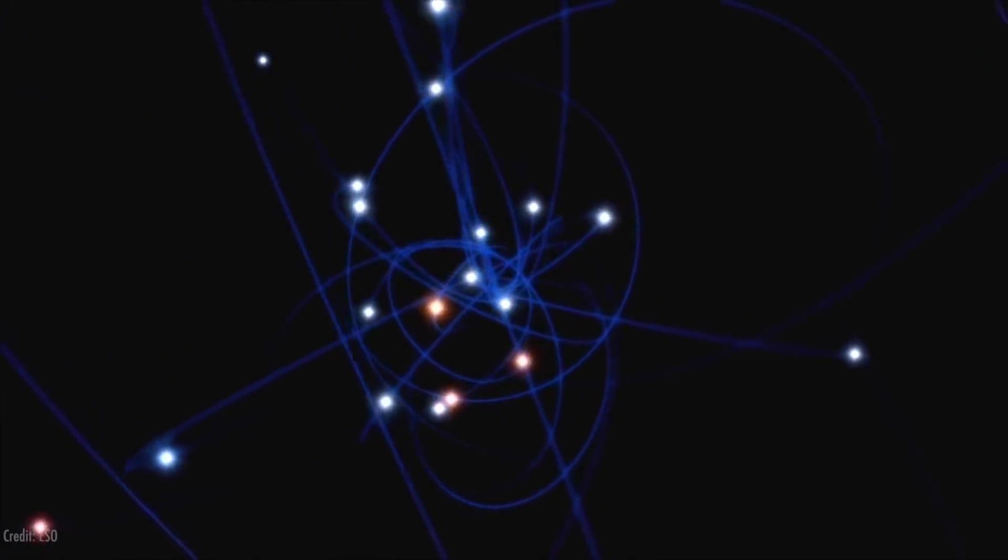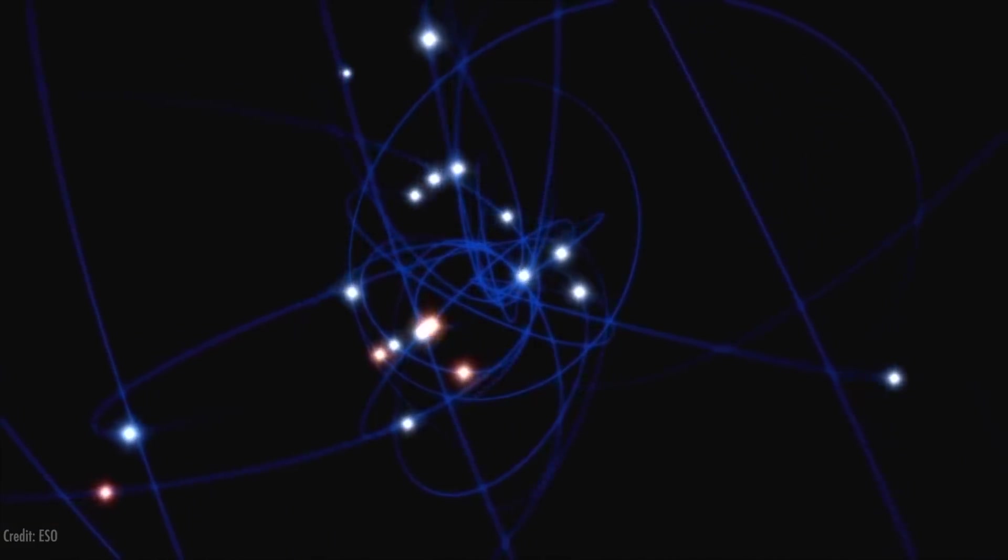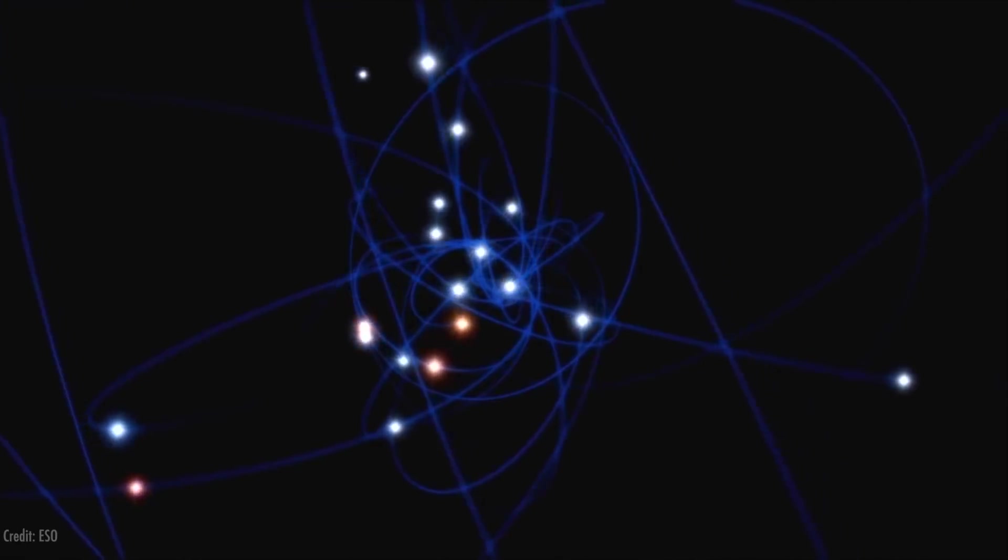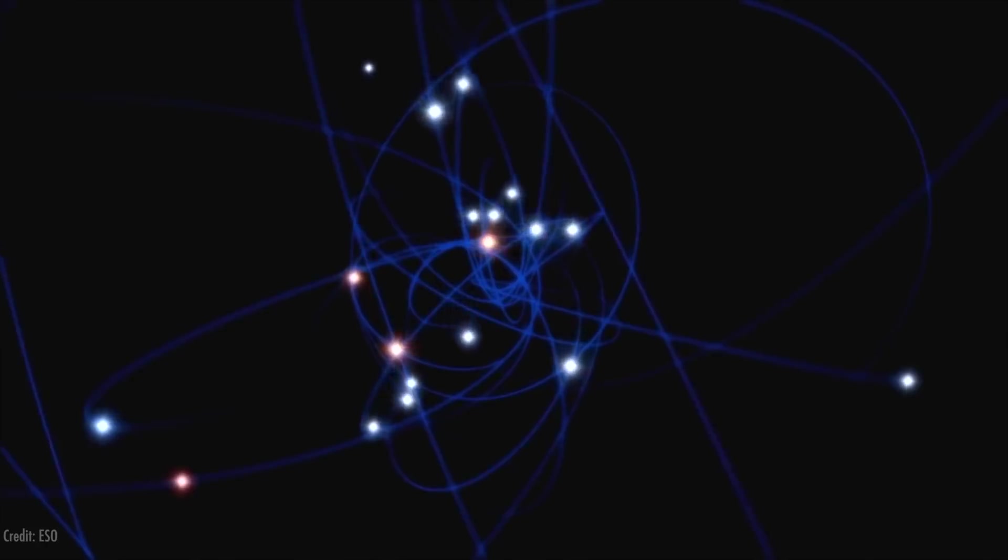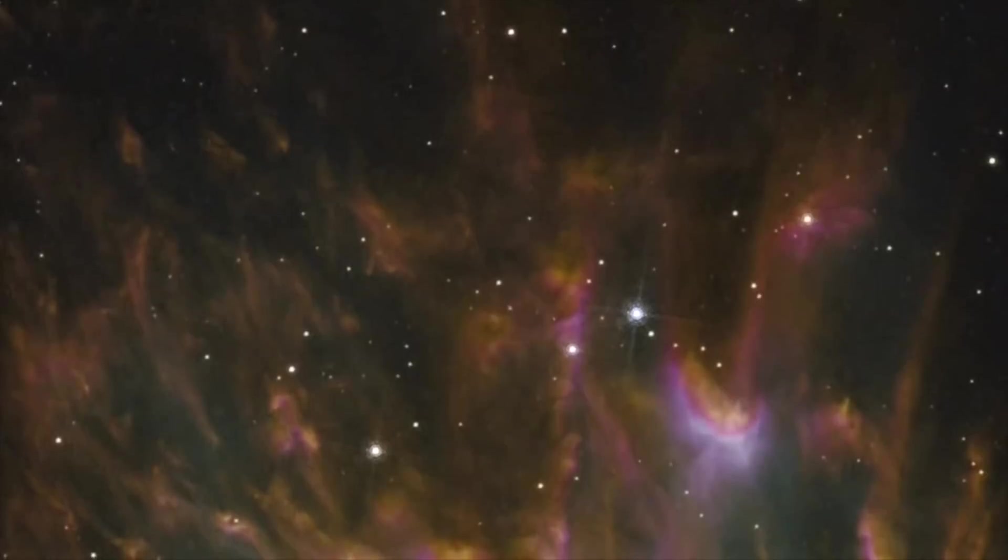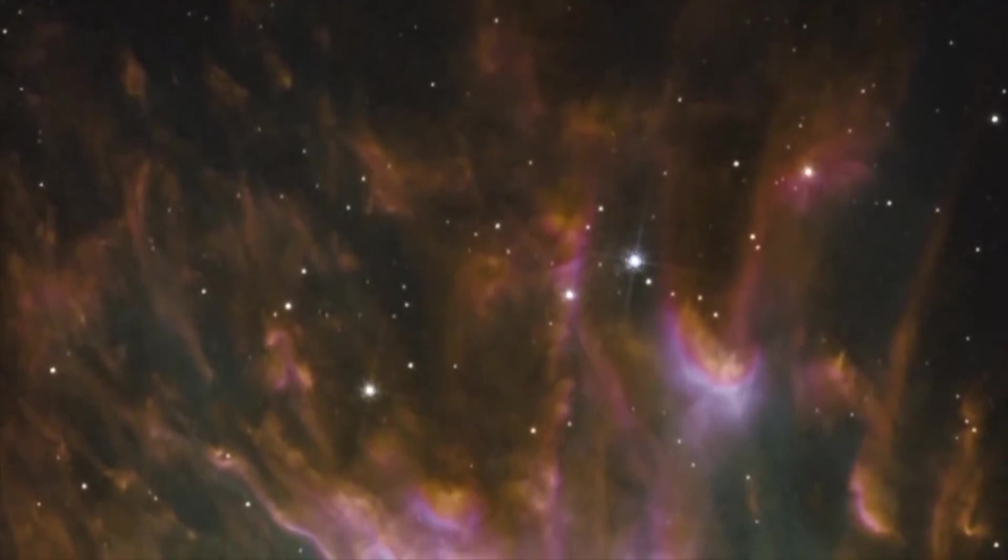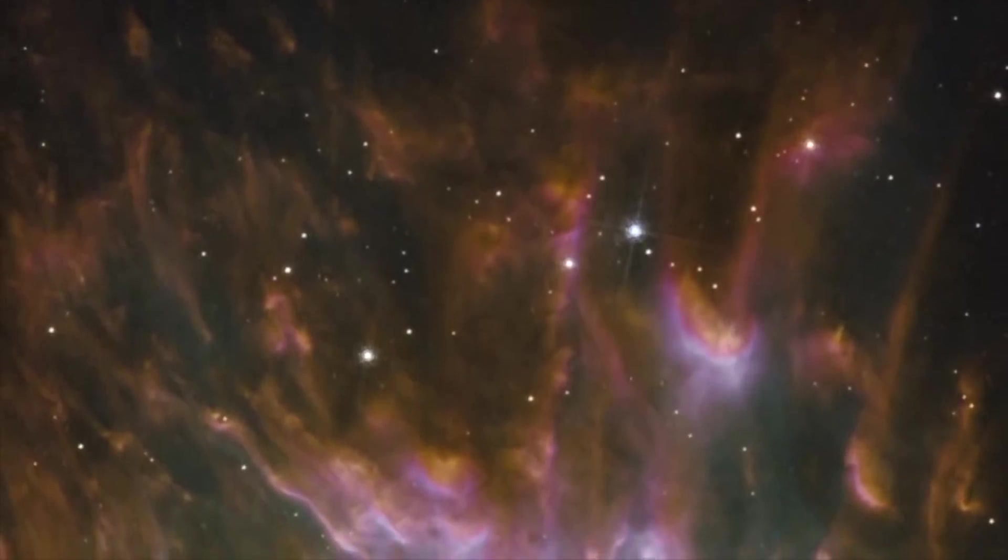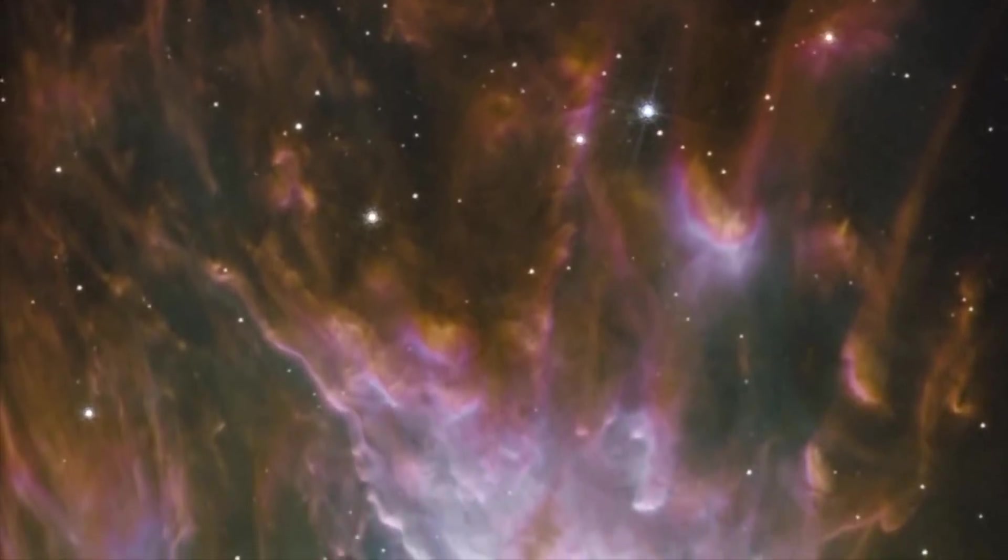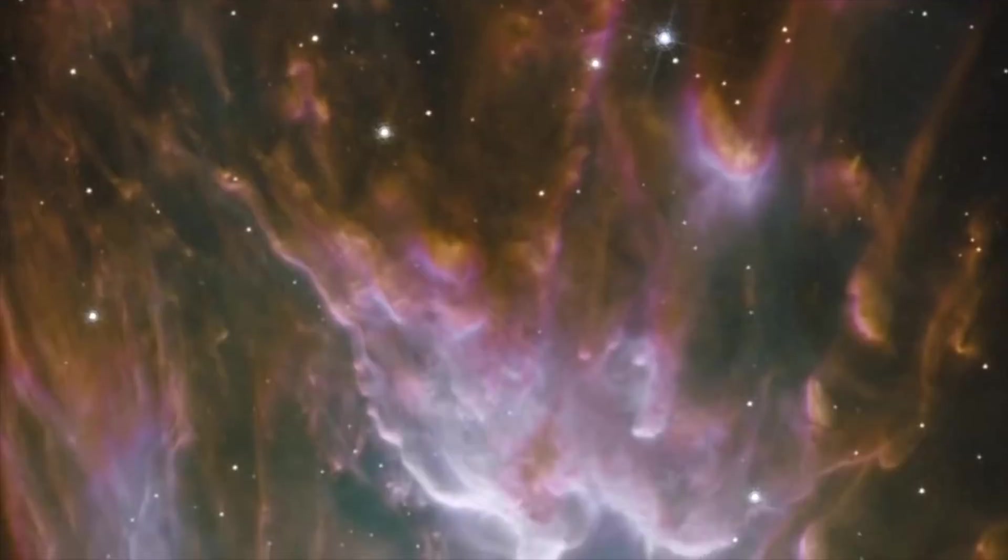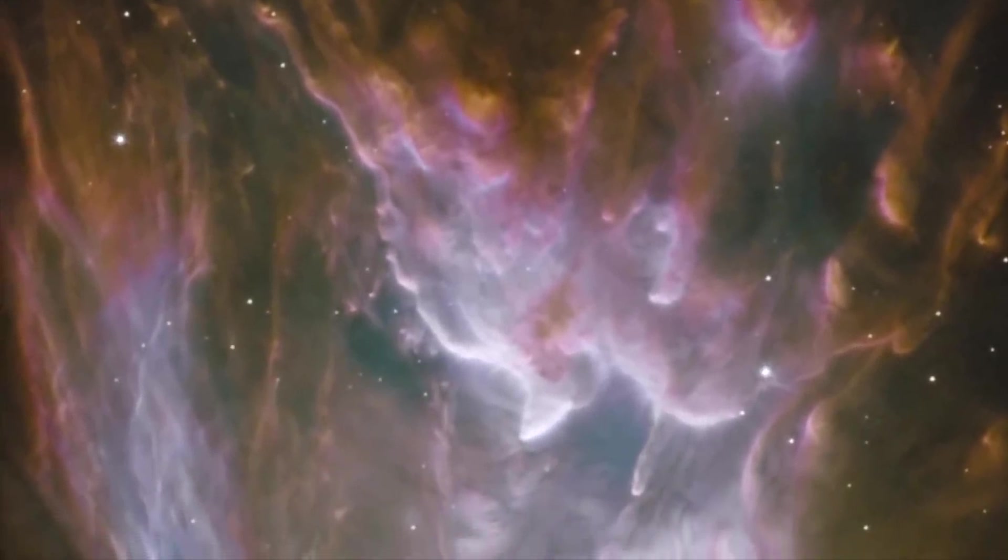But every observation up until then, which was 1920 or so, had told us that the universe at very large scales is static. Stars move around, and nebula wiggle. Sometimes something blows up. But the universe is static. The universe is here, and the universe has always been here. He had no reason to suspect this line of thinking was wrong. So he had to introduce another character, another ingredient in the universe to prevent that expansion or contraction, something that he called the cosmological constant.